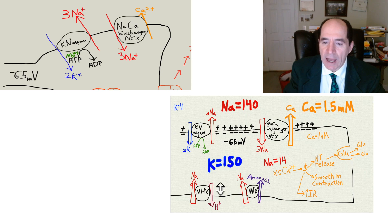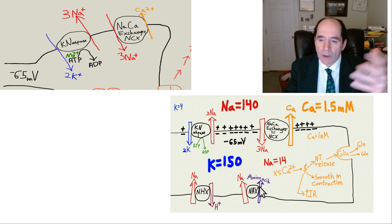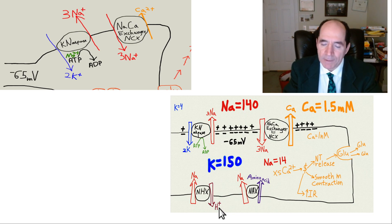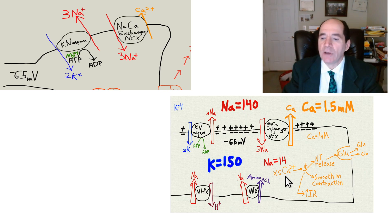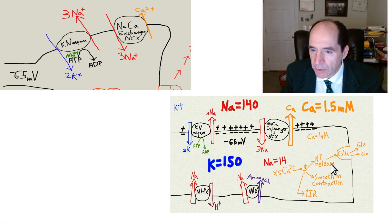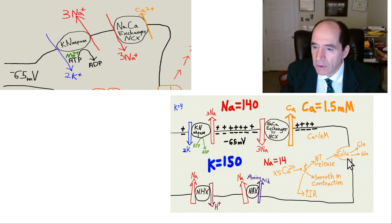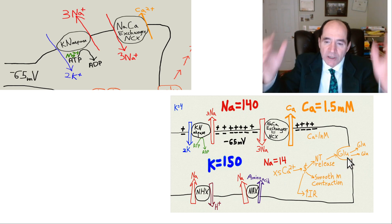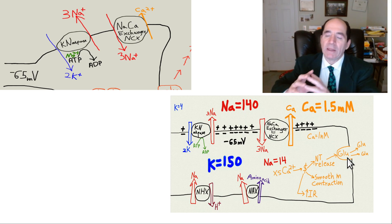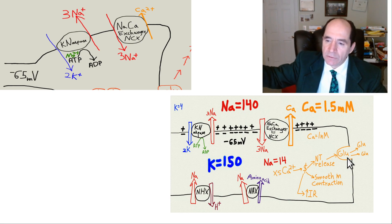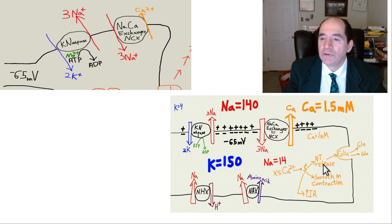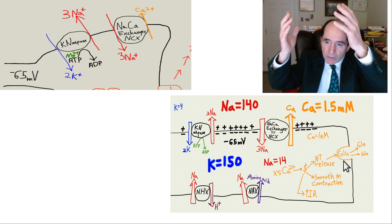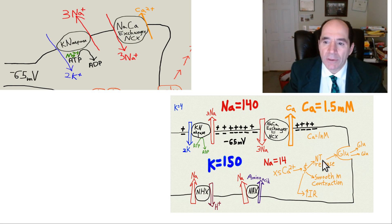Ion pumps do all kinds of work: bringing in amino acids, pumping out protons. When calcium is high inside a cell, the cell does whatever its main function is — for a neuron, that's releasing a neurotransmitter. In this case it's glutamate. Glutamate is about 90% of brain neurotransmitters, and it's excitatory — it exerts an excitatory effect on the post-synaptic cell across the synaptic cleft. Calcium activates cells; glutamate is 90% of brain neurotransmitters and is excitatory.